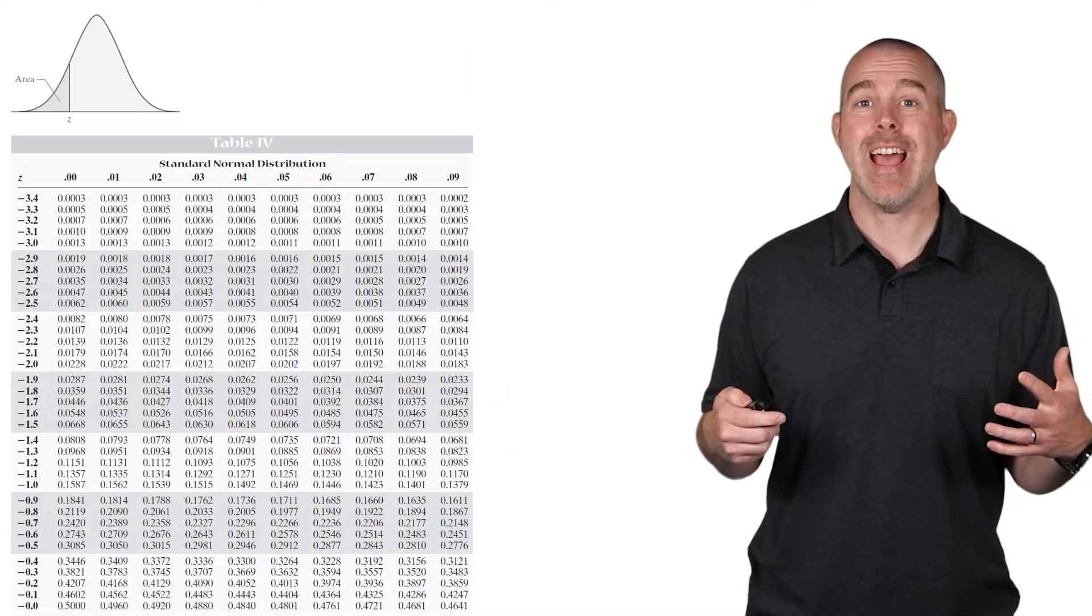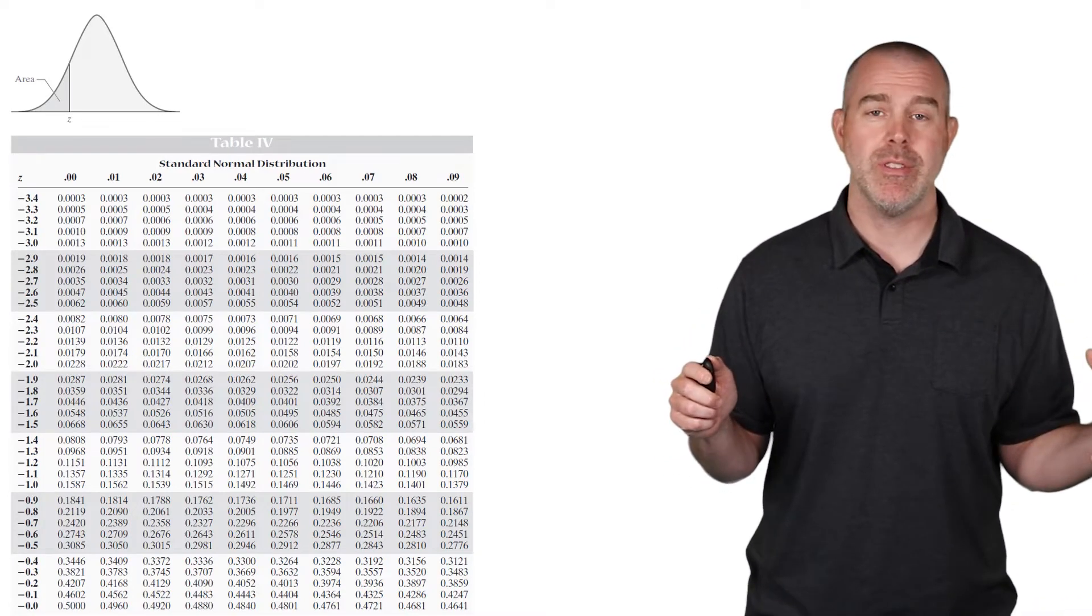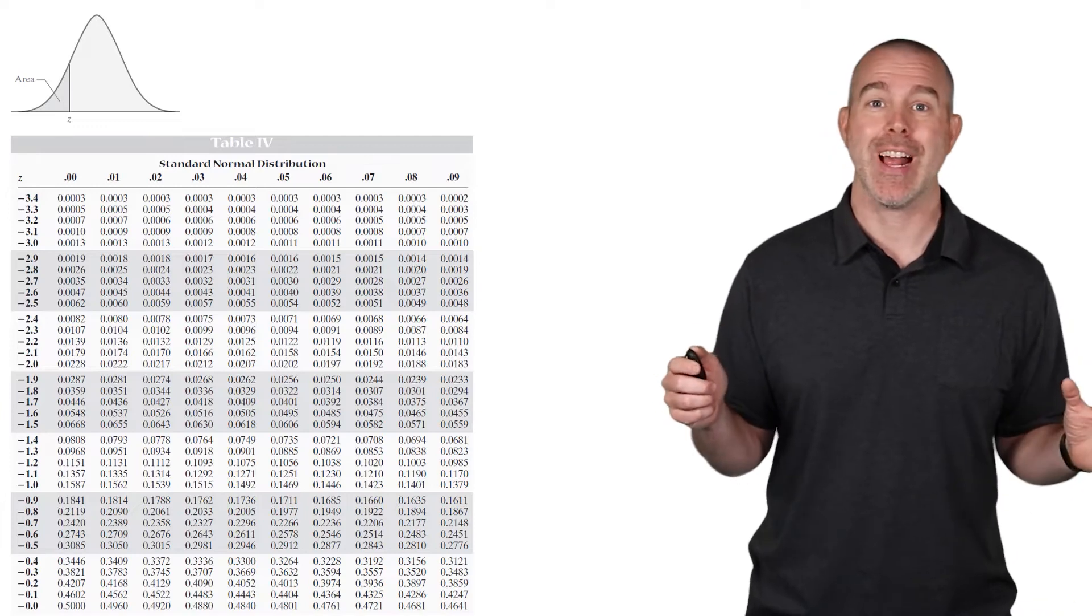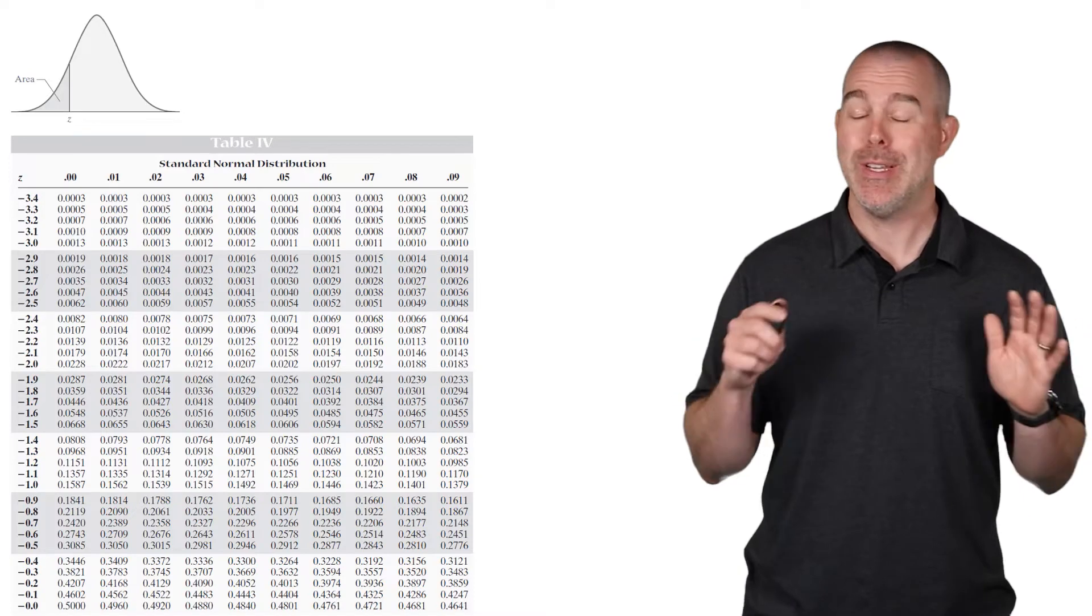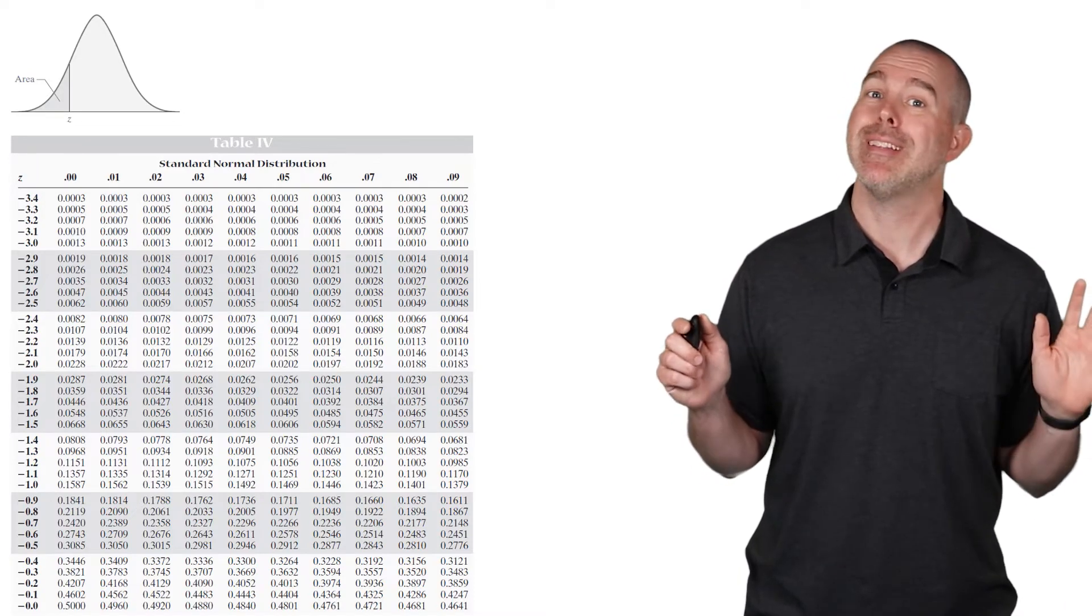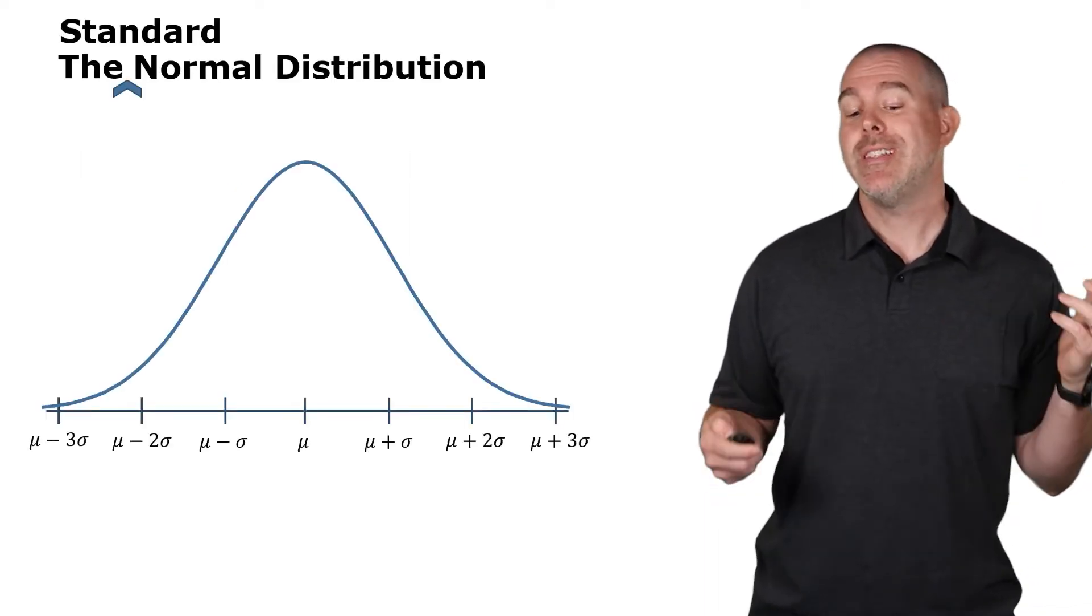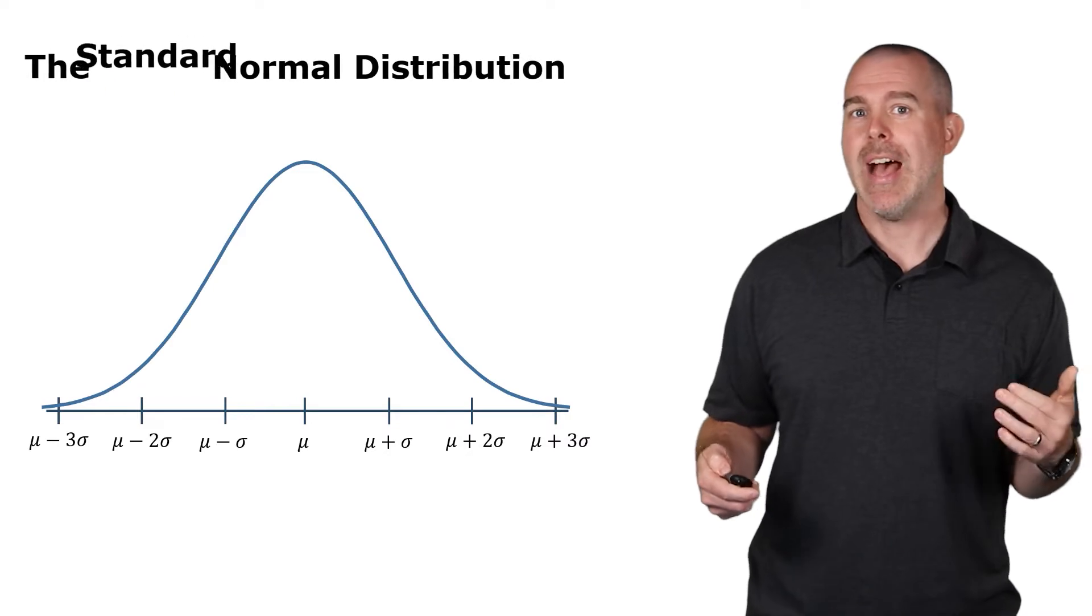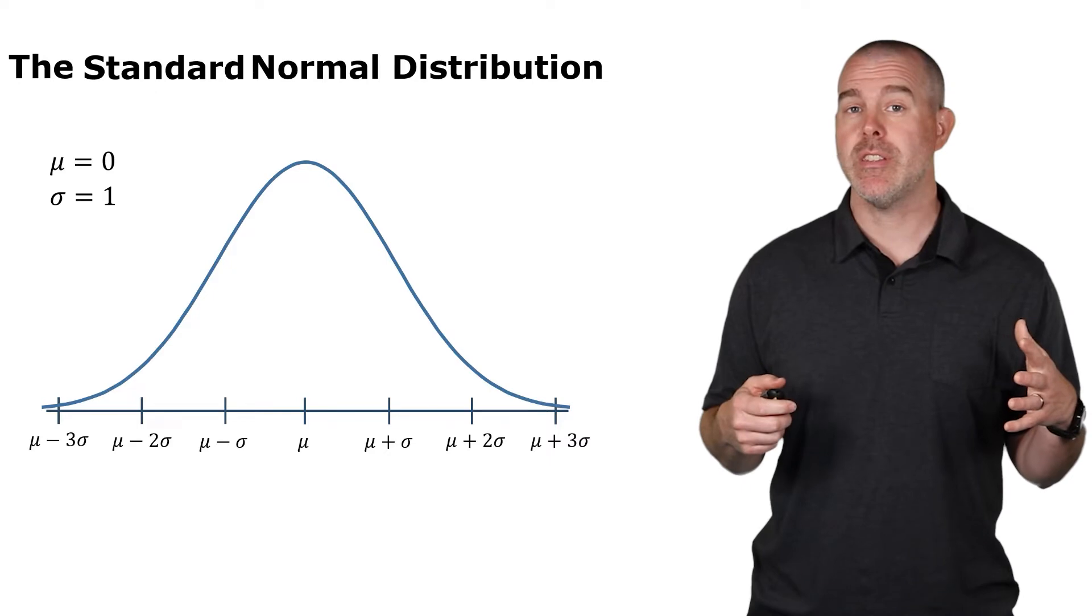All right, the first way is actually on a table. I'm going to talk about this just for completeness sake. I do not want you using a table. Hopefully, if you're in a class, your professors don't want you to use a table. When I'm recording this, it's 2021. We should not be using tables anymore. But sometimes people still want you to do this. So what I have here, this is a table for the standard normal distribution. So there's that word standard there. Is that important? Yes, very important.